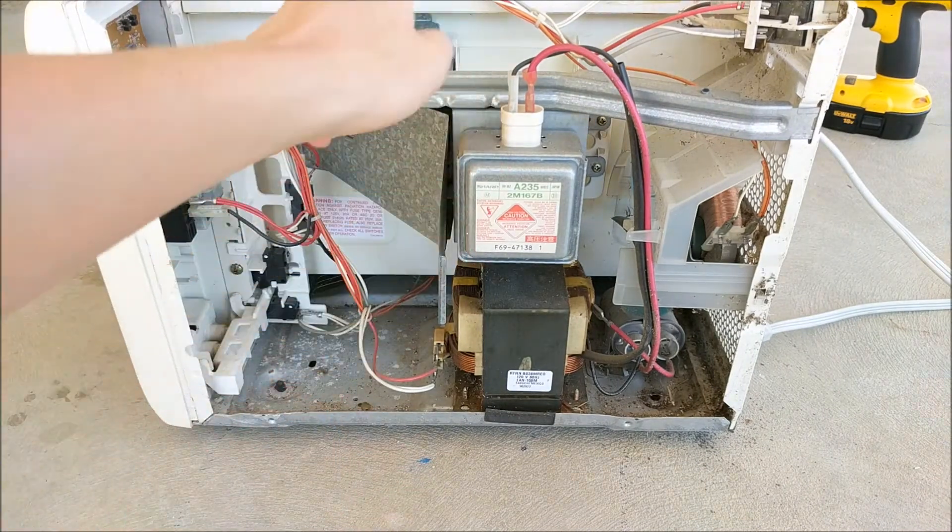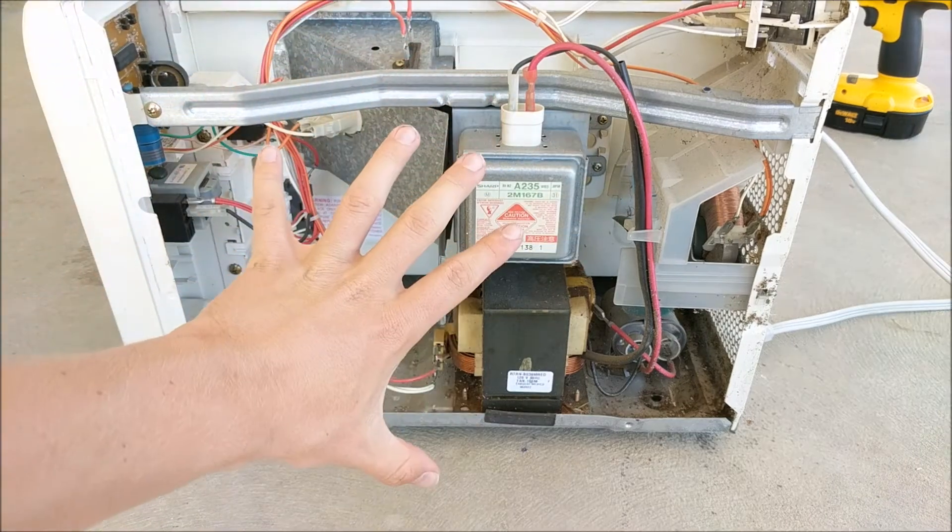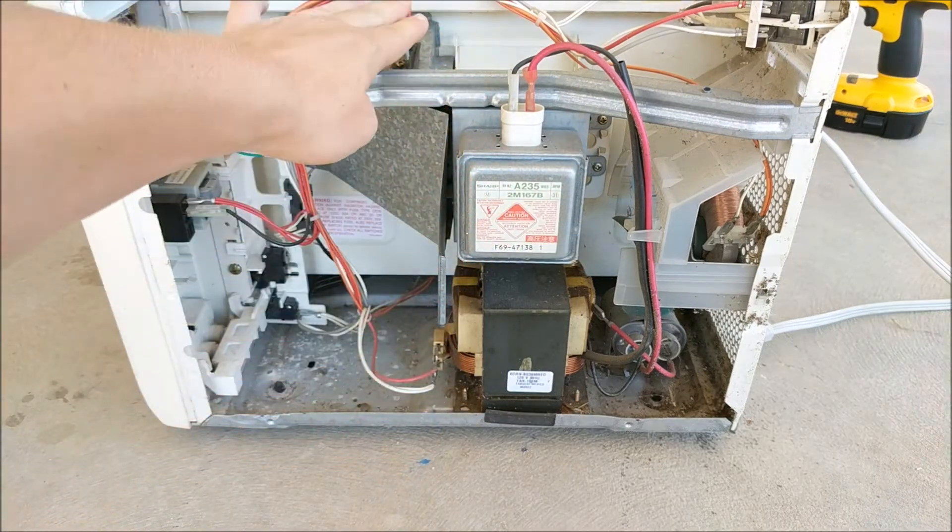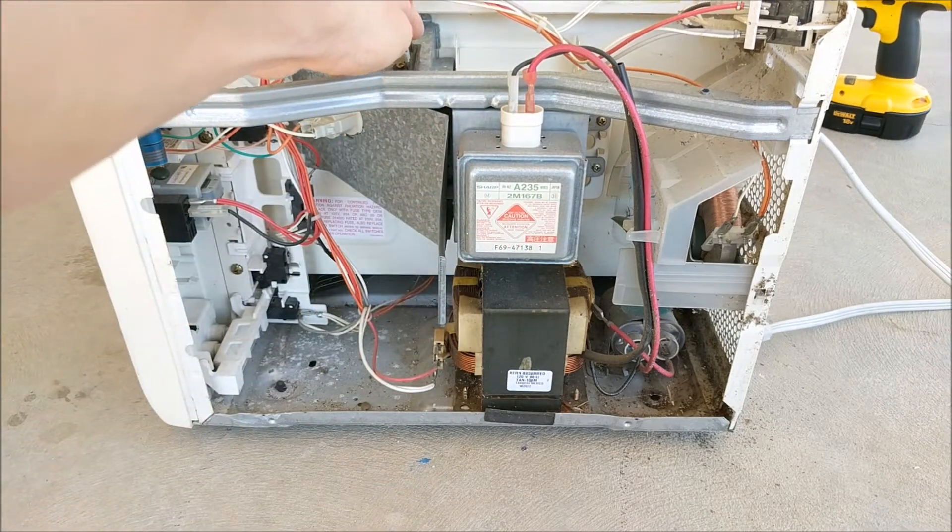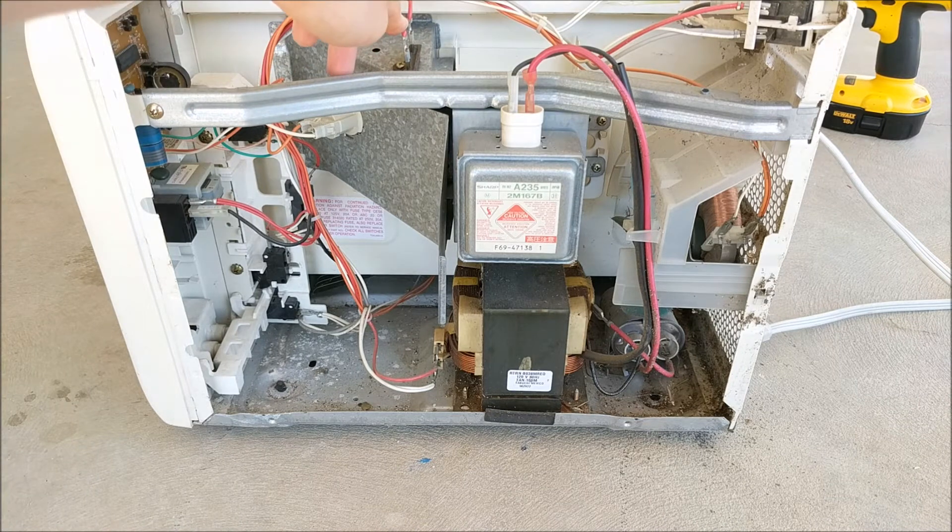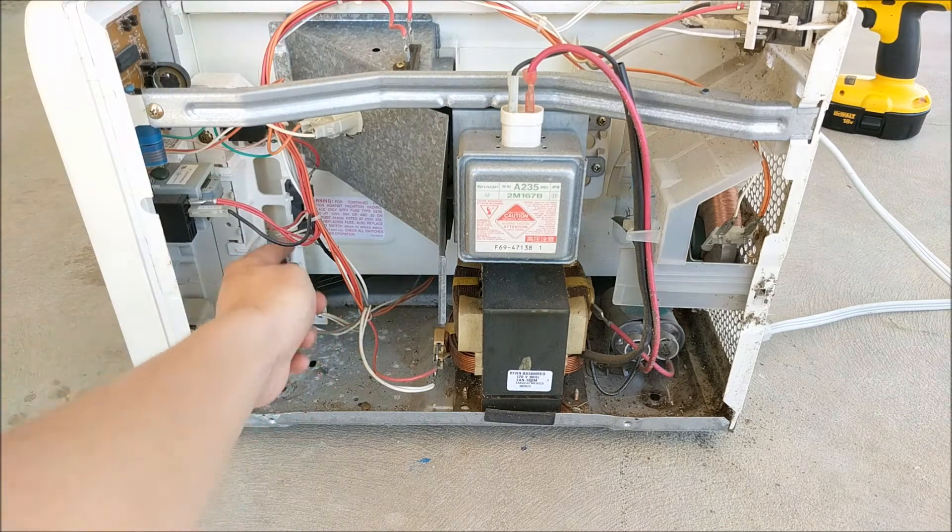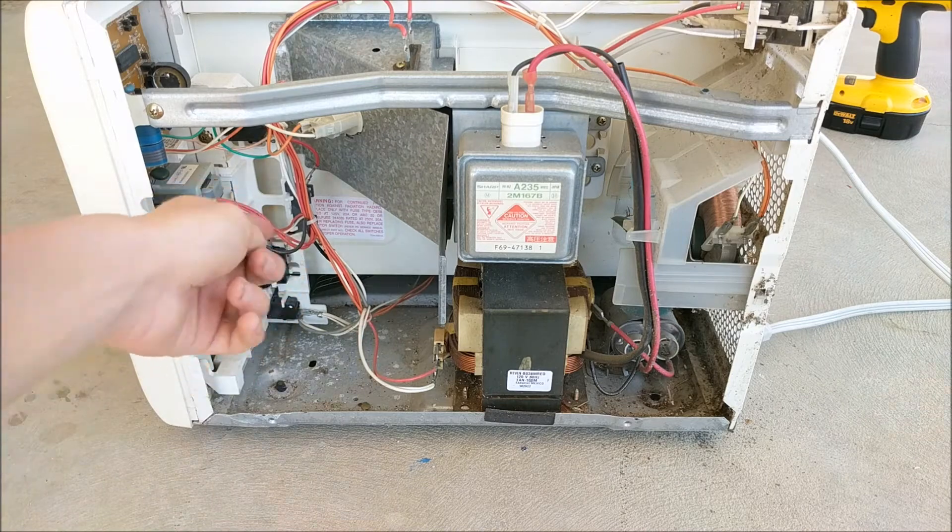Now all the other switches and wires and things are just to make sure that your microwave does not overheat. Like this is an emergency cutoff switch that will turn off your microwave if it gets too hot. And these switches only allow your microwave to turn on when the door is closed.